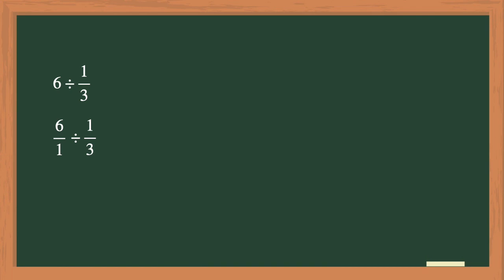When dividing with fractions, you can follow these three easy steps of keep, change, and flip. This means that you will keep the first fraction the same. So 6 over 1 will remain.